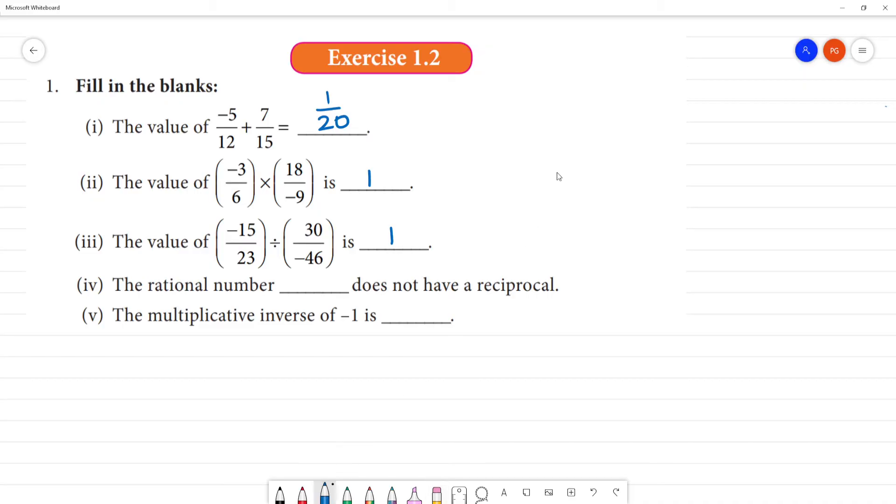Next is the fourth one. The rational number which does not have a reciprocal. This is important. If we look at all numbers, we look at rational numbers. 0 is also a rational number. This is the exception case. Now, 0 is a rational number. If we look at reciprocal, 0 by 1 is 0. This reciprocal is 1 by 0. If we look at 1 by 0, it has no value. We get infinity. It has no definite value.